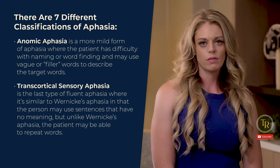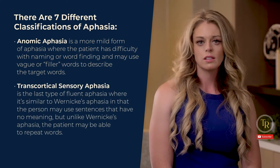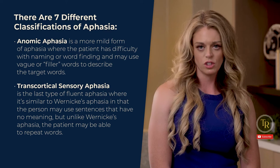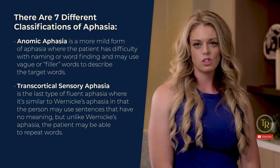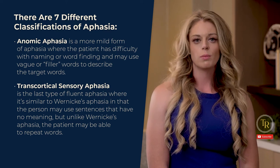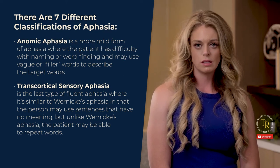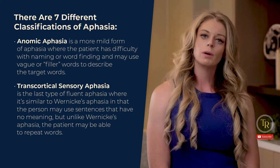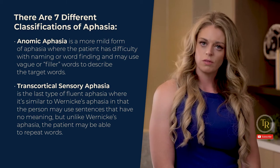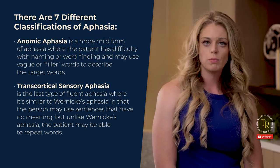Transcortical sensory aphasia is the last type of fluent aphasia. It is similar to Wernicke's aphasia in that the person may use sentences that have no meaning, but unlike Wernicke's aphasia, the patient may be able to repeat words.